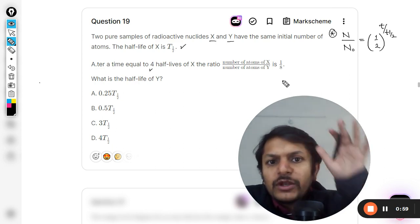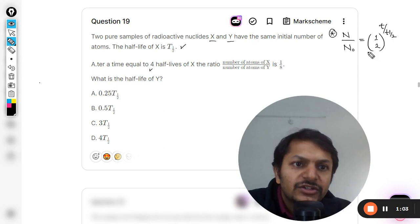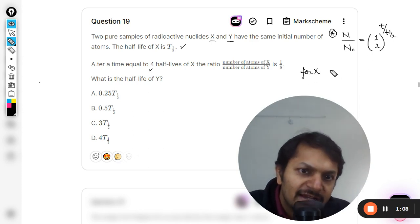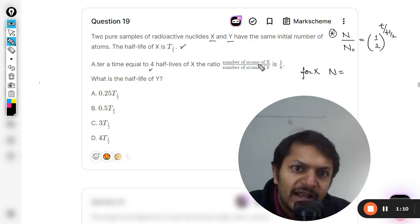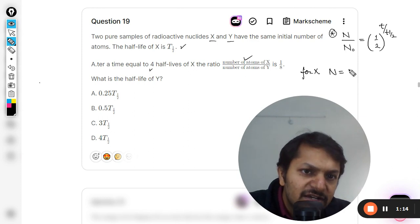Now this is the general formula that is again not given anywhere, so you need to remember this. And we need to use this formula here for number of atoms of X and number of atoms of Y. So let us first apply this on X. For X we are going to find the number of atoms of X remaining.